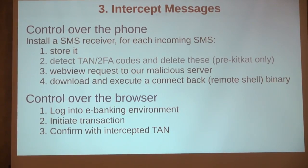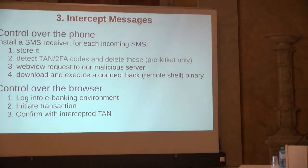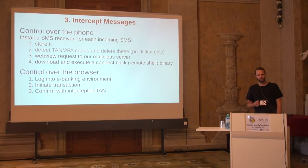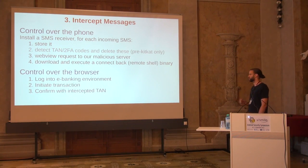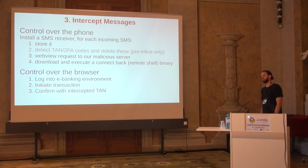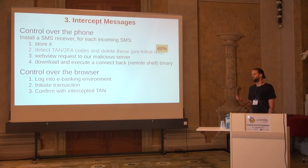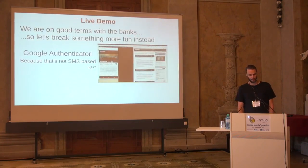Once all this is in place, we can intercept SMS messages. We install an SMS receiver on the phone, and for each incoming SMS we detect and store transaction authentication numbers and delete them — but only on pre-KitKat Android, since it's no longer possible on later versions. We send a WebView request to our malicious server, download and execute a remote shell, and since we already control the browser, we can log into the banking environment, initiate a transaction, receive the SMS, and confirm it. Forty percent of users are still on pre-KitKat, meaning they won't see anything happening.